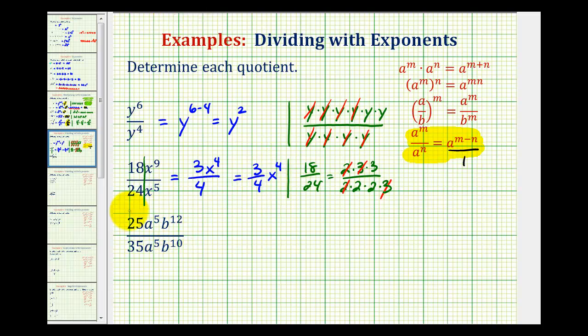And then for the last example, we need to simplify the fraction 25 thirty-fifths, a to the fifth over a to the fifth, and b to the twelfth over b to the tenth.